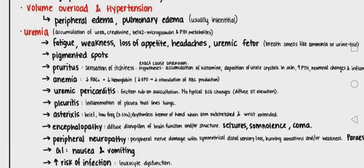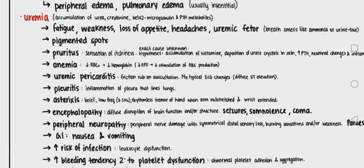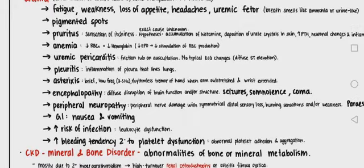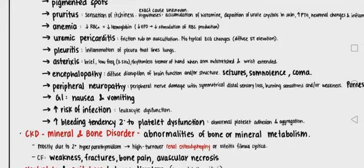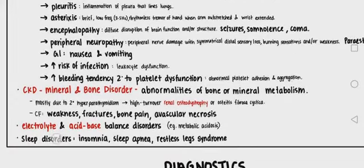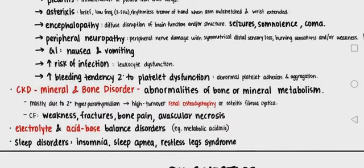Further clinical features include anemia, uremic pericarditis, pleuritis, asterixis (which is tremors of the hand when arms are outstretched), encephalopathy (disruption in brain function), peripheral neuropathy, GI disorders including nausea and vomiting, increased risk of infection due to leukocyte dysfunction, and increased bleeding tendency due to platelet dysfunction and abnormal platelet aggregation and adhesion.